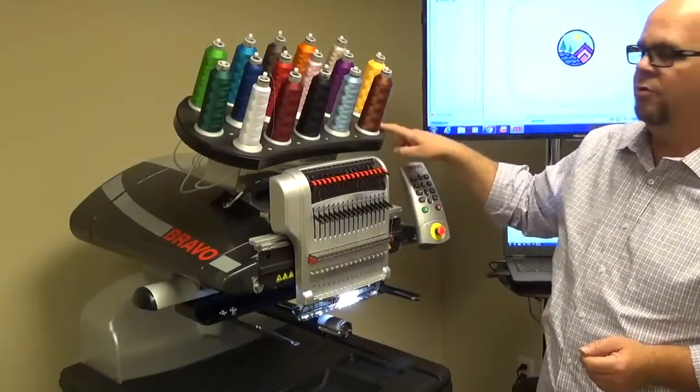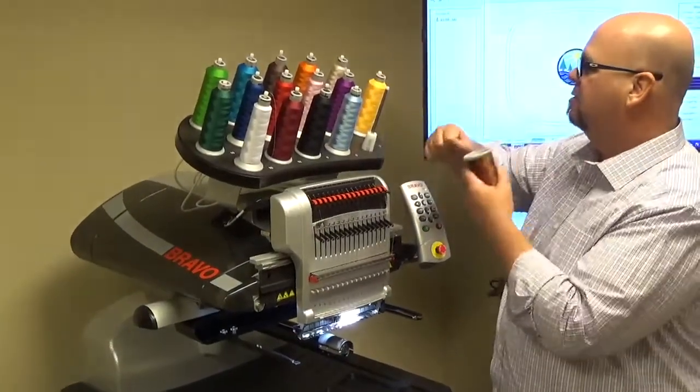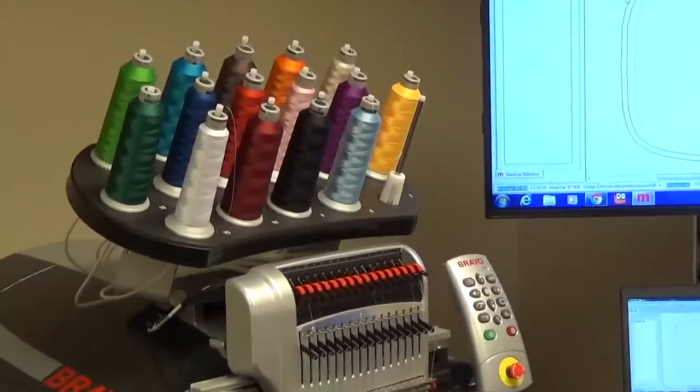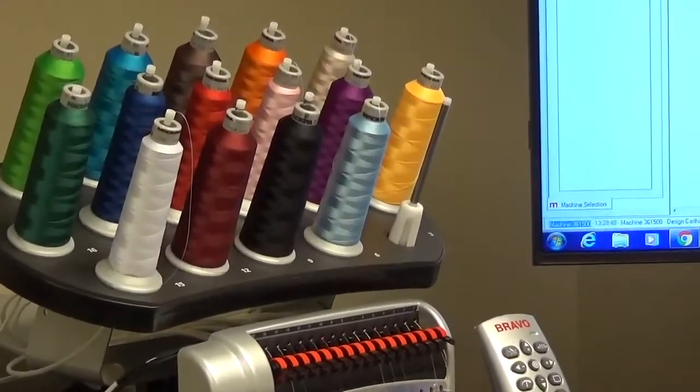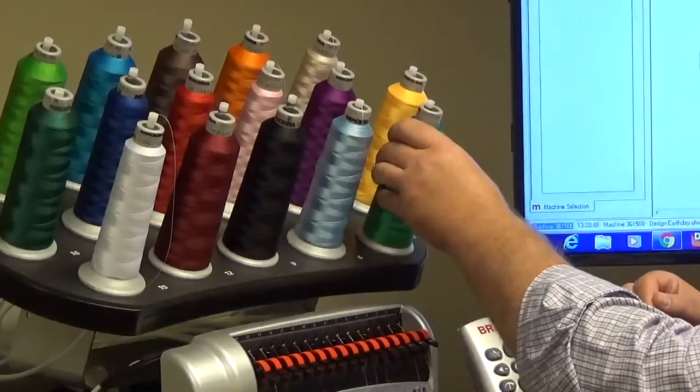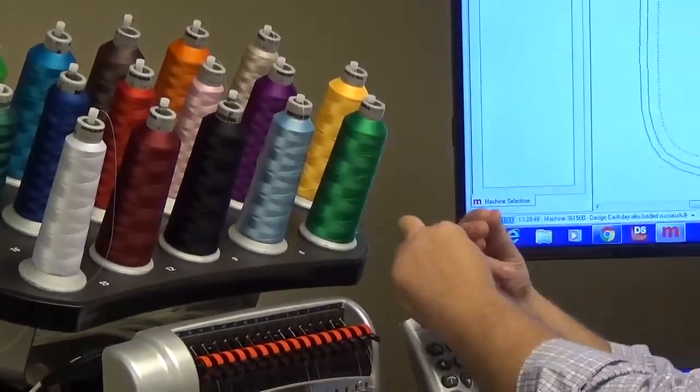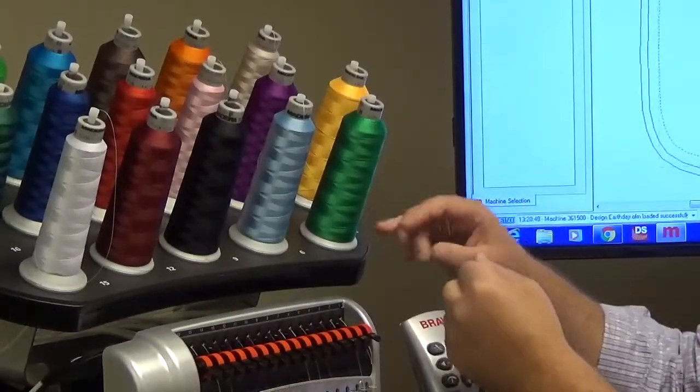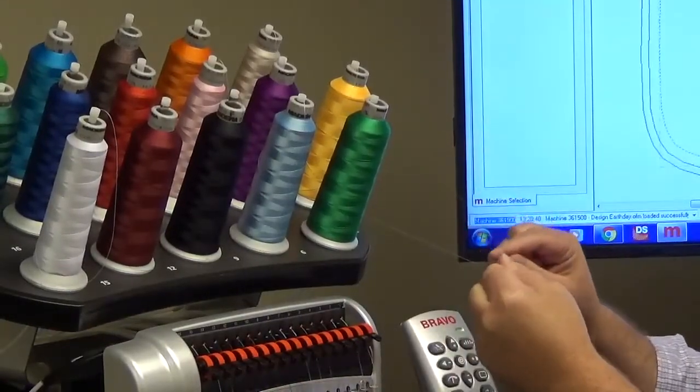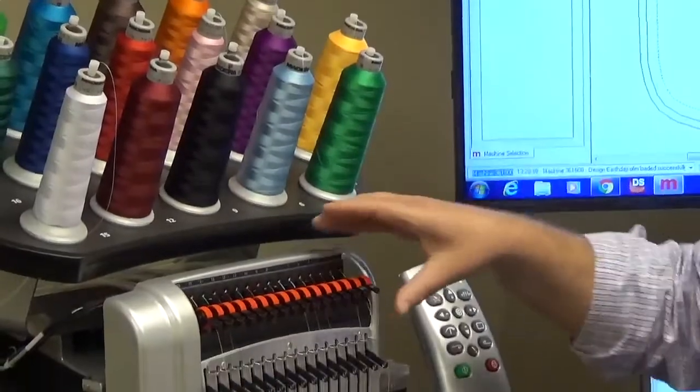So what I'm going to do is I'll take cone 3 off this brown, we'll just go ahead and pull it off, just break the thread, and let's say we want to put this green in place of the brown. We would just slide it onto the post, pull the thread through, and we're going to tie a square knot. A square knot, just for your knowledge, will actually pull right through the eye of the needle.